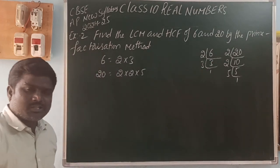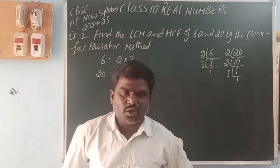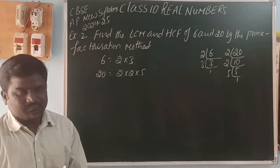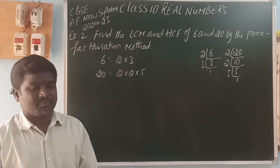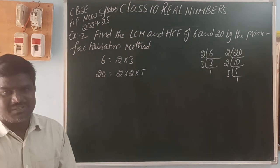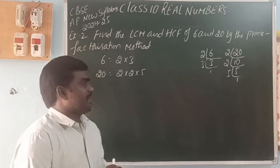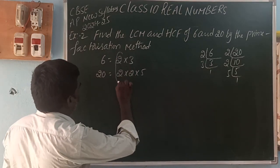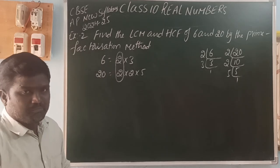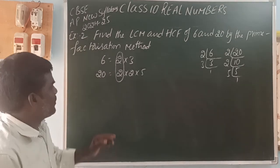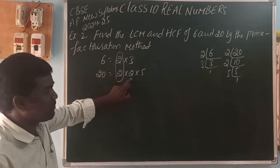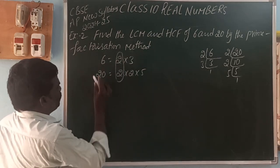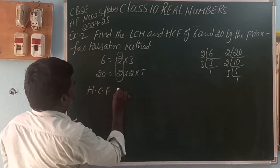LCM means Least Common Multiple; HCF means Highest Common Factor. For HCF using the prime factors method between two numbers, we take the common prime factors at their least power. The common prime factor here is 2. In 6, the factor 2 appears 1 time; in 20, it appears 2 times. The least is 1 time, so HCF = 2.